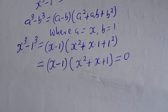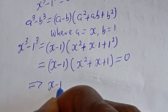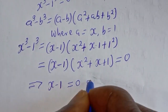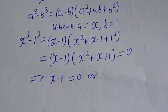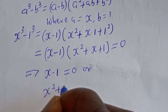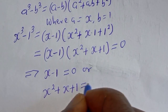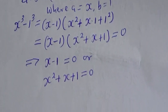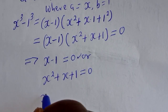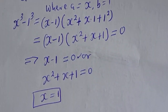Then s minus 1 is equal to 0, or s squared plus s plus 1 is equal to 0. From the first case, s is equal to 1. This is the first value of s.